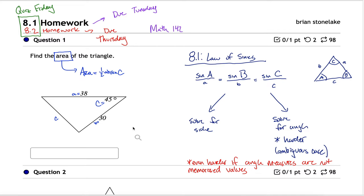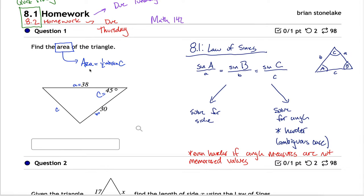For problem one, the area of the triangle is ½ · a · b · sin(C) where a = 38, b = 30, and the angle is 45°. So area = ½ × 38 × 30 × sin(45°). You could rewrite sin(45°) as √2/2, giving 570√2. You don't need to do all that — you can just type the expression in. But if you use trig functions in the homework system, it always assumes radians, so you'd need to convert 45° to 45π/180.